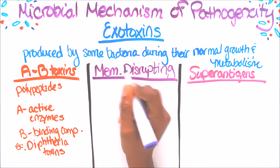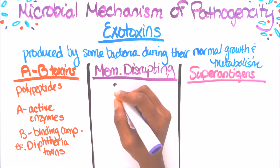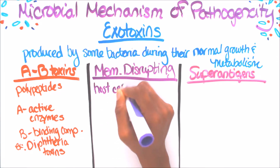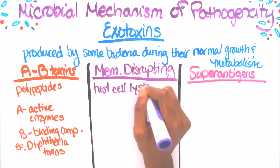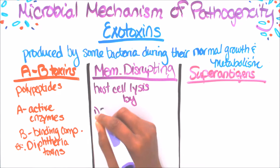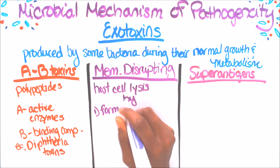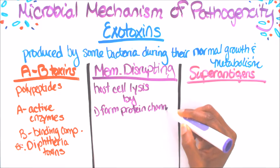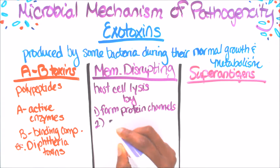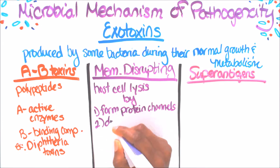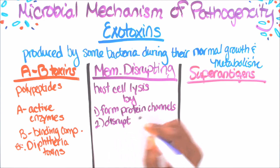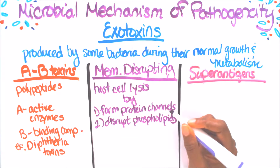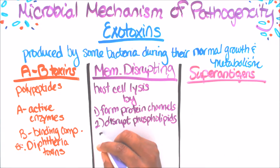The second type is membrane disrupting toxins. The host cell is lysed in two ways: one, protein channels are formed, and two, there is a disruption of the phospholipids. An example is Staphylococcus.